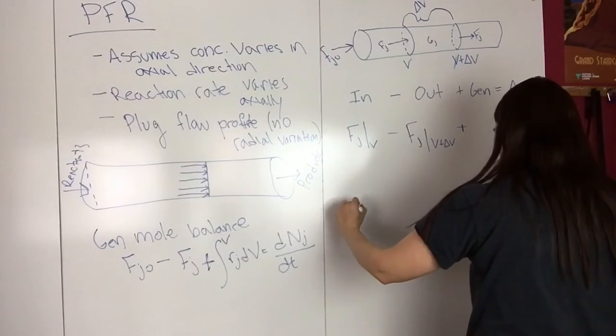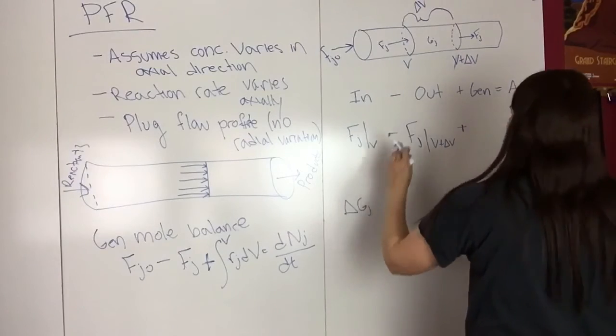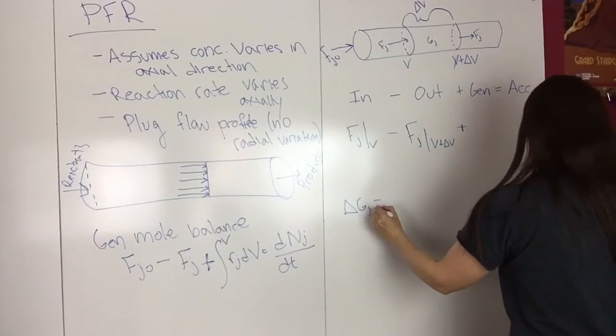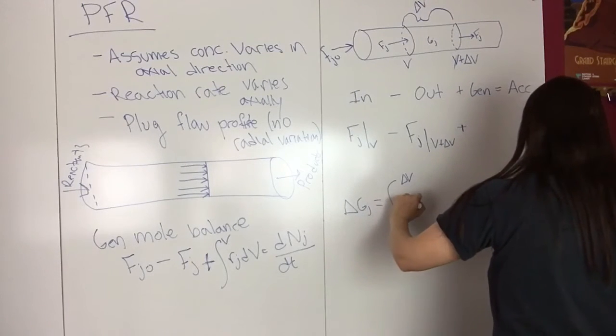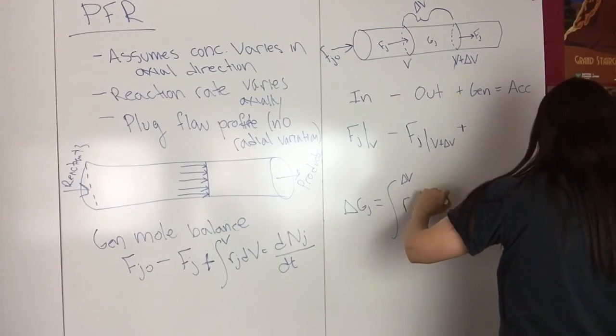Delta G_J is equal to the integral of R_J dV over delta V.